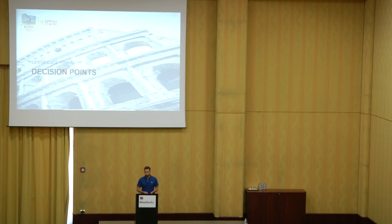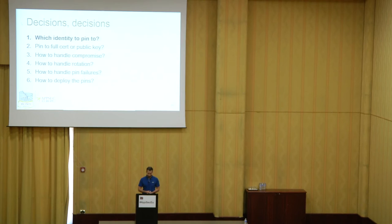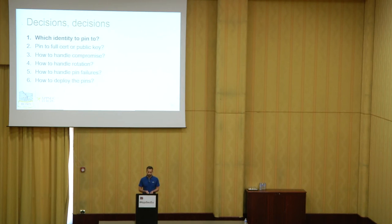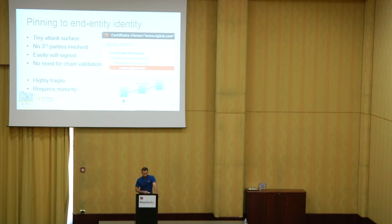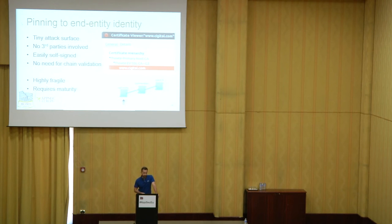If you want to implement certificate pinning, you really have to think about a lot of things and create a document describing an architectural solution. The first question is: where do you pin? You have basically three options. All certificate chains have roughly three steps: an entity certificate, one or more intermediate CAs, and the root CA. Your decision is which one you're going to pin to — or multiple.